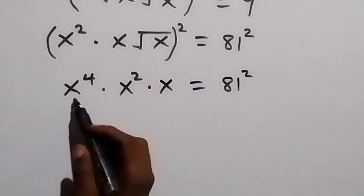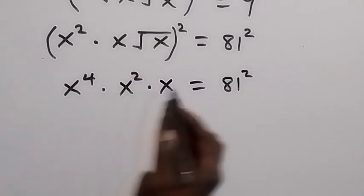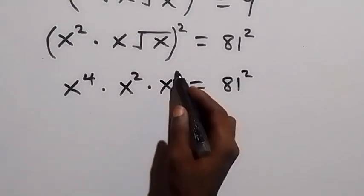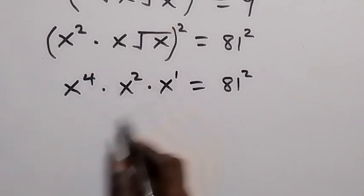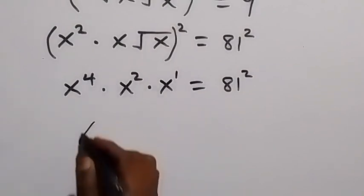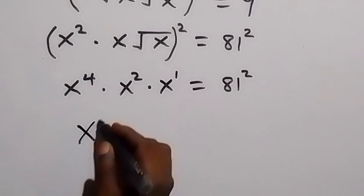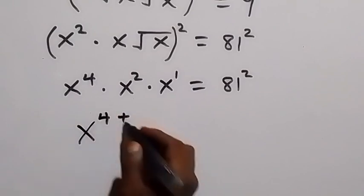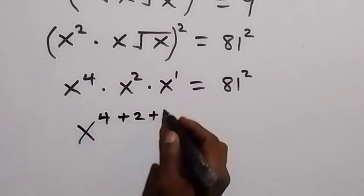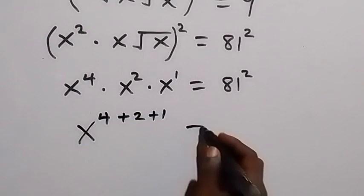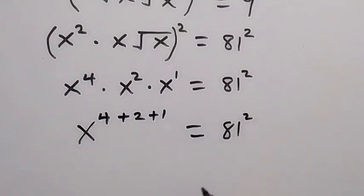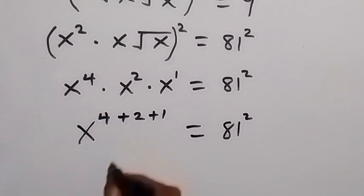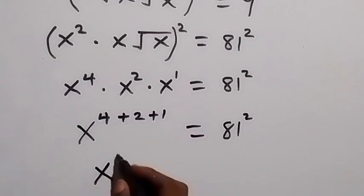In the next step, we see these terms have the same base and we multiply. From the law of indices, we can add the powers together, and we have x raised to the power 4 plus 2 plus 1, which equals 81 squared. Adding these together gives x raised to the power 7.